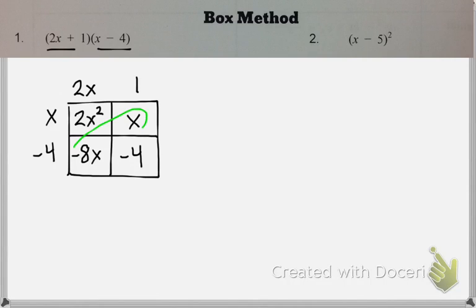It works out kind of nice, because when you combine like terms, you can just look diagonally right here. So your 2x squared stays the same. And we have negative 8x and positive x, which is negative 7x. And then we have negative 4.